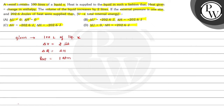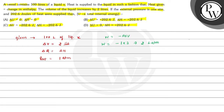Now firstly, we will calculate the value of W. W = −P·ΔV, where ΔV is the change in volume, equal to 2 liters, and P is the external pressure. So W = −1 × 2 = −2 liter·atm.